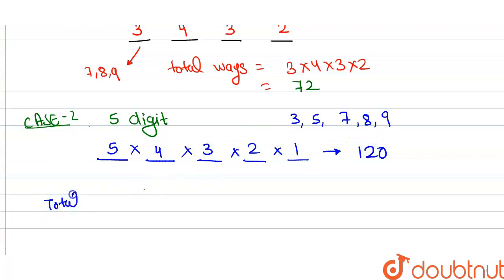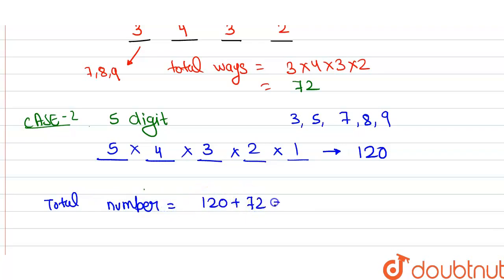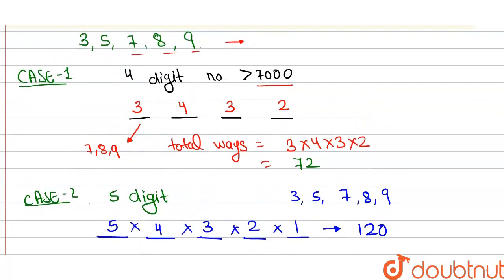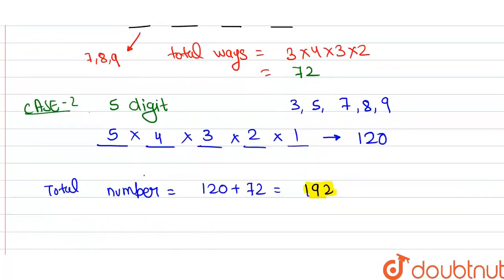So the total numbers formed that are greater than 7000 is 120 + 72 = 192. It means 192 numbers can be formed using the digits 3, 5, 7, 8, 9 which are greater than 7000. Thank you.